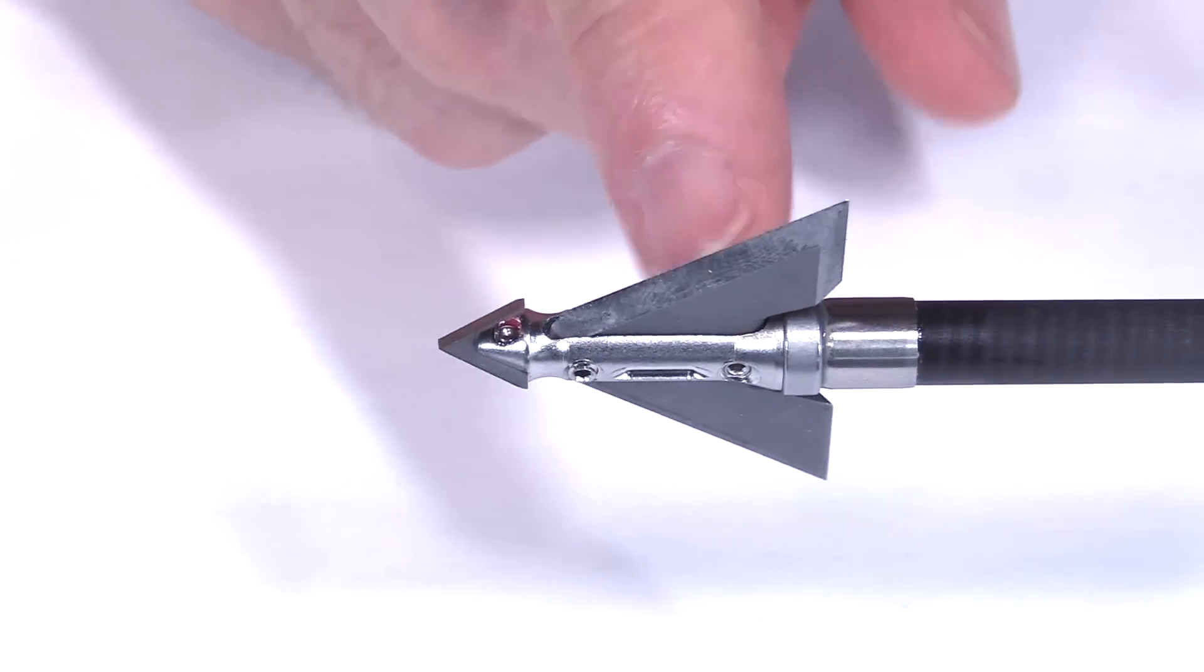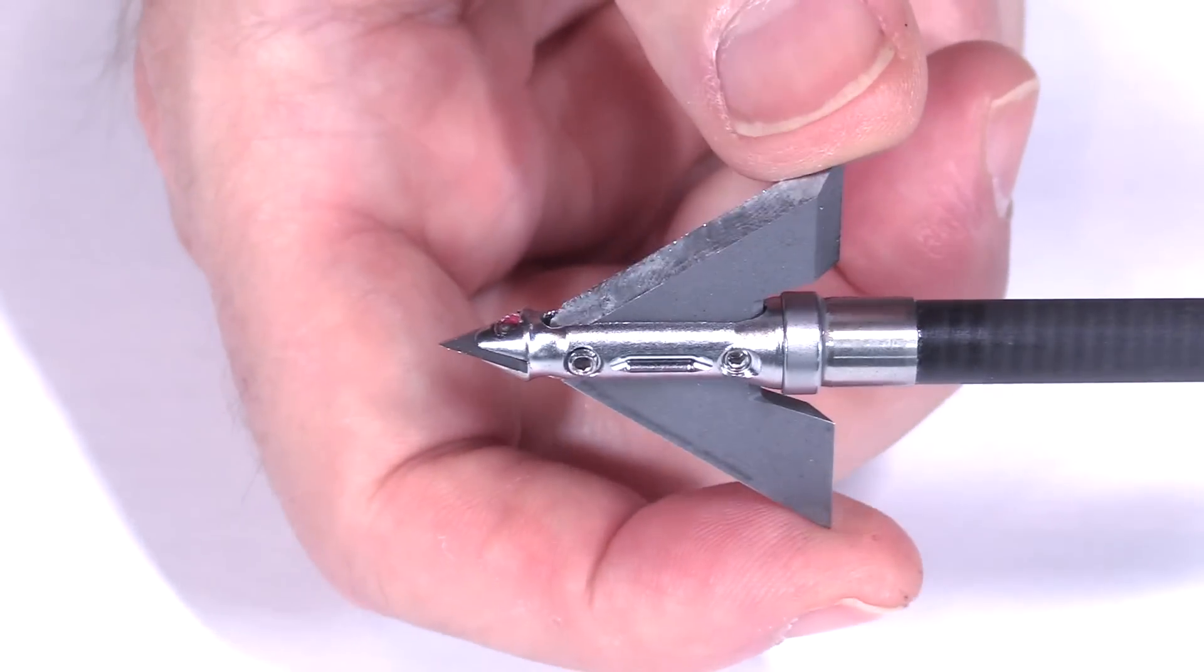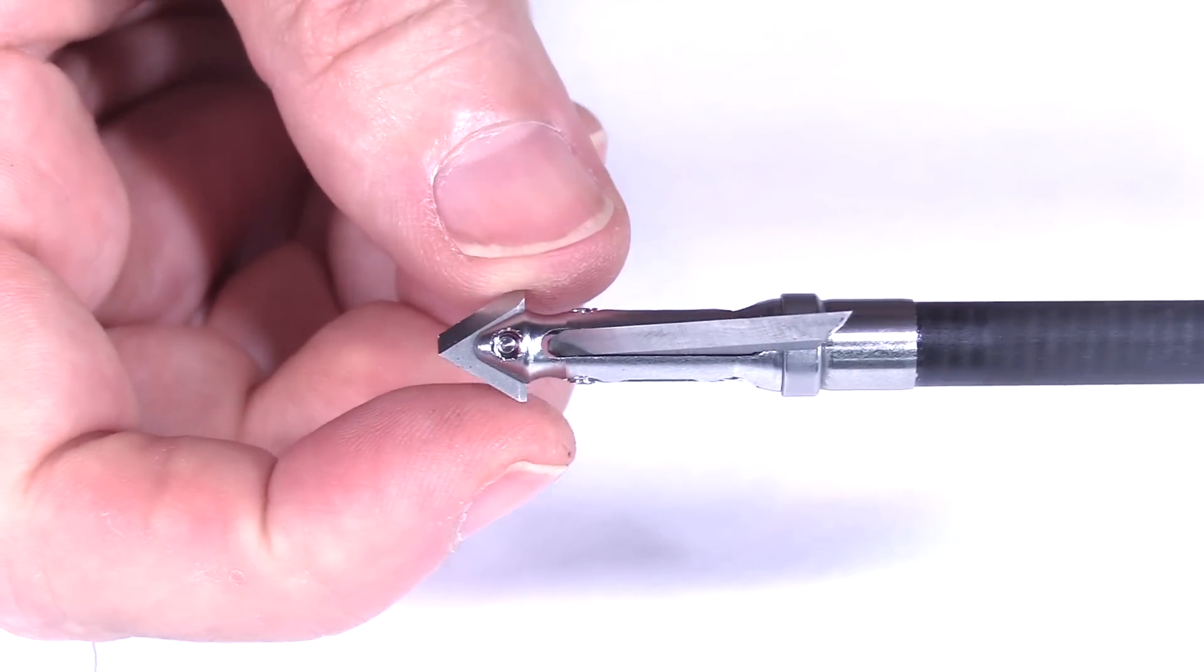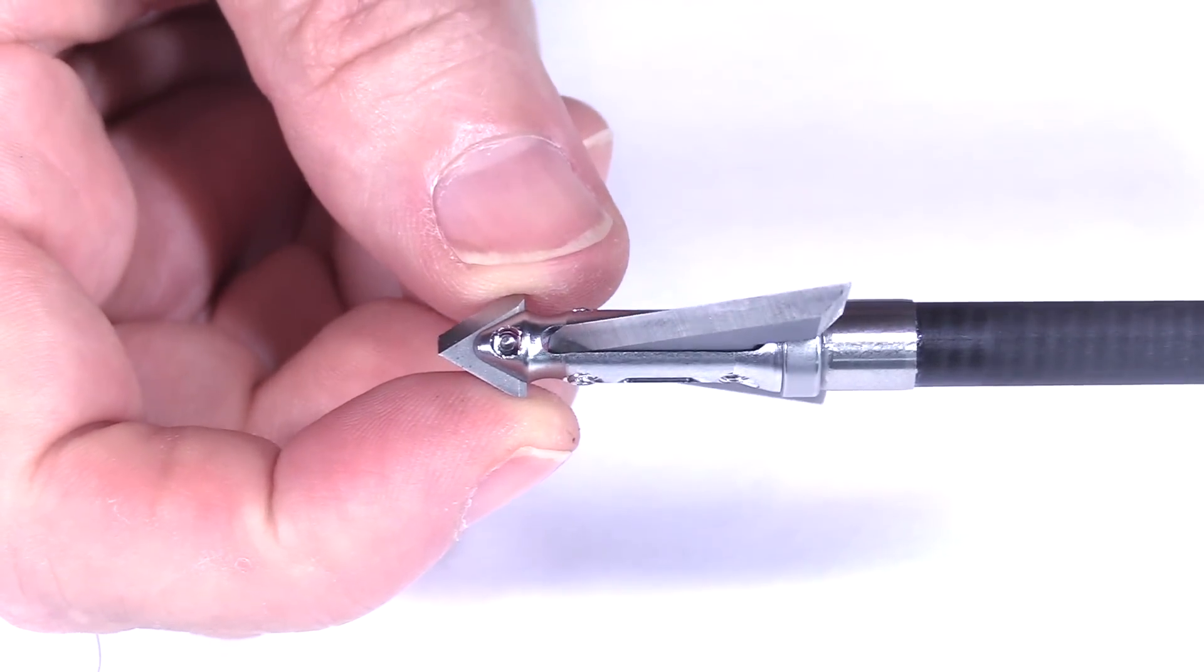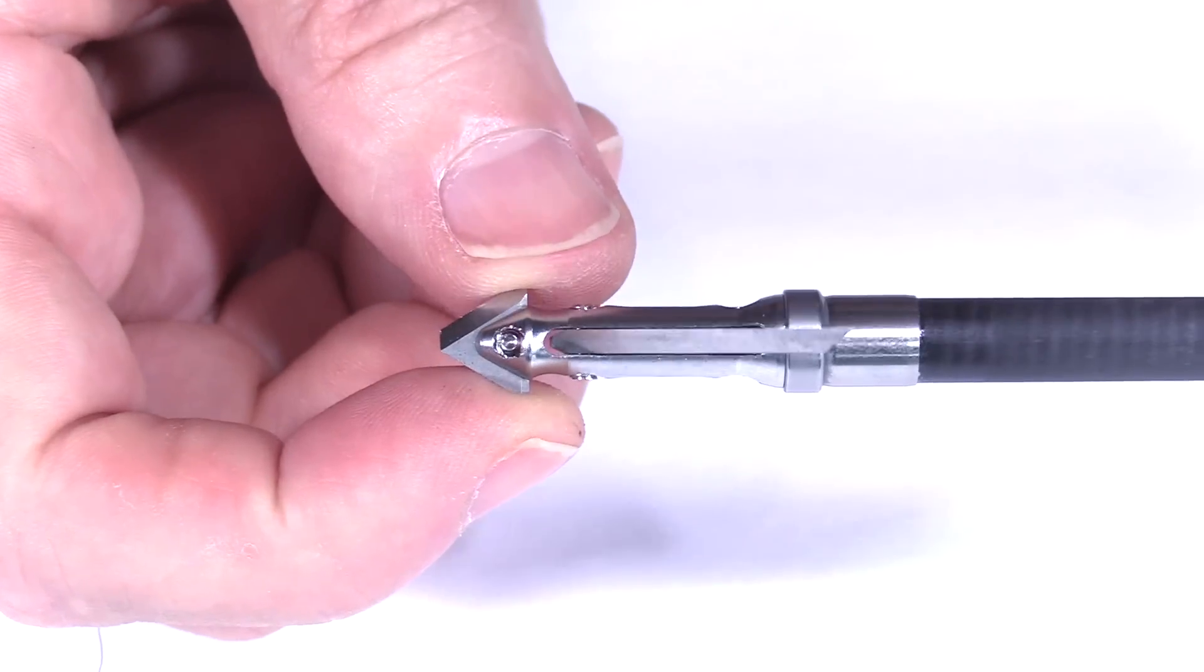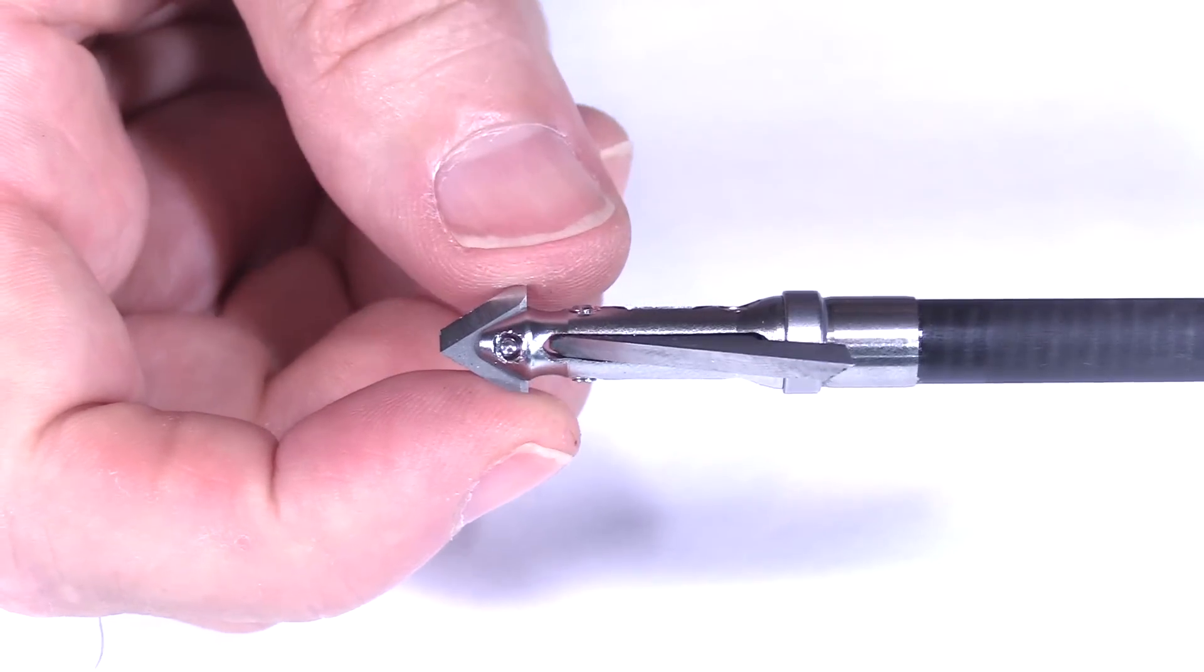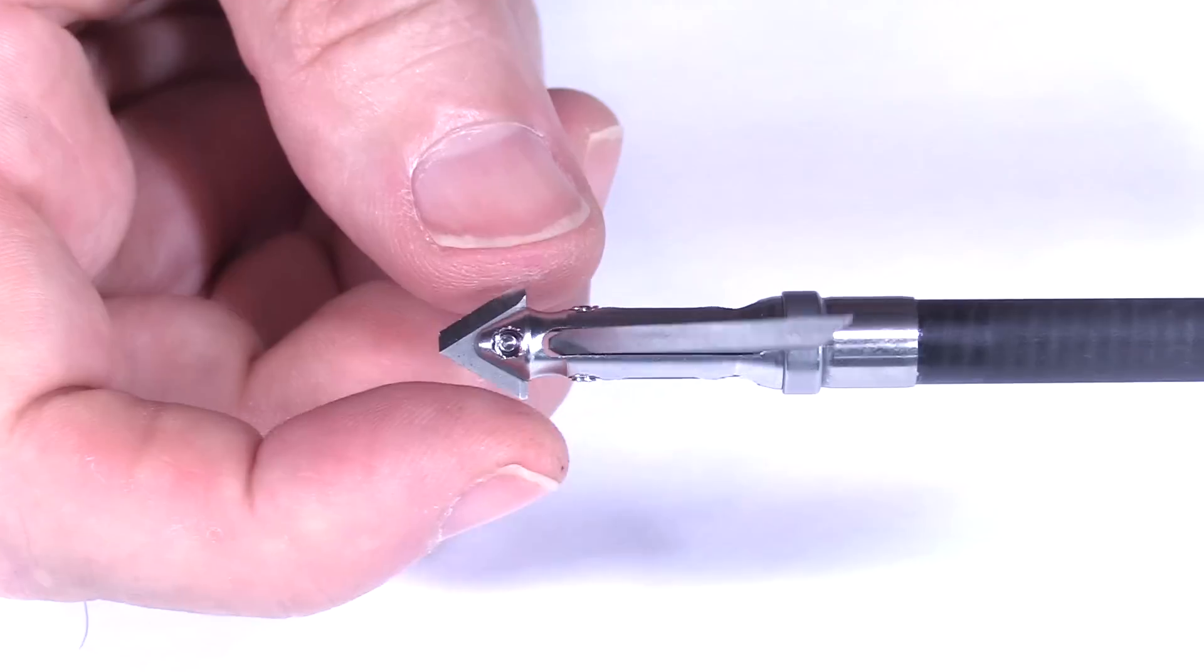And so again, everything is all steel. It's 420 stainless steel. Cutting diameter of the main blade is a full one and a half inches. Cutting diameter of this cross tip is three-eighths of an inch. So you're getting a total cut here of 1.88 inches. Really nice style, nice size of cut.